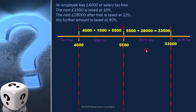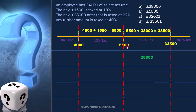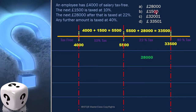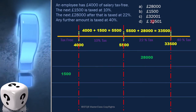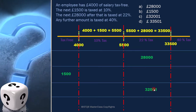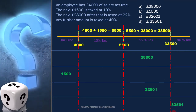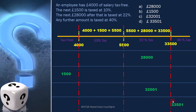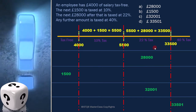Option A is 28,000 — it falls between 5,500 and 33,500. Option B is 1,500 — it is less than 4,000. Option C is 32,001 — it also falls between 5,500 and 33,500. Option D is 33,501, which is just one value more than 33,500, meaning it is right at the boundary. Compared to all other values, option D is nearest to the boundary. Therefore, option D is the answer.